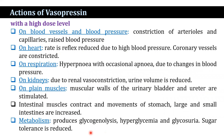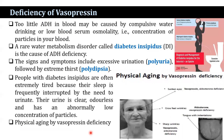Sugar tolerance is also reduced. When antidiuretic hormone is secreted too little — which may be caused by compulsory water drinking or low blood serum osmolality, that is the concentration of particles in the blood — a rare water metabolism disorder known as diabetes insipidus results, caused by antidiuretic hormone deficiency. Signs and symptoms include excessive urination, that is polyuria, followed by extreme thirst, that is polydipsia.